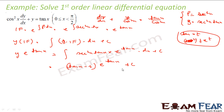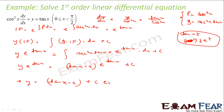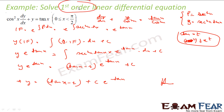So you get this value. To find y, I get y equals (tan x minus 1) plus c times e to the power minus tan x — and that is the answer. We just found that this equation is a first-order linear differential equation. We used the formula, found the IF, and applied the solution: y into IF equals integration of q times IF dx plus c.